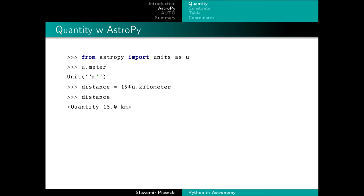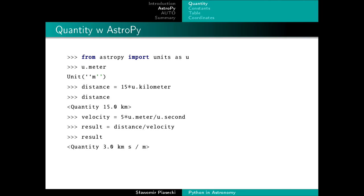For example, if we want to know how much time is needed to cover 15 kilometers moving at 5 meters per second, we define distance and velocity as quantity objects. Dividing distance by velocity gives a result in km·s/m — a weird unit for time. AstroPy has a problem simplifying units automatically, so we call decompose() and get the correct answer: 3000 seconds, which is 50 minutes.